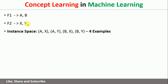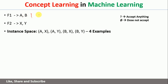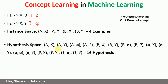The instance space contains four possibilities. Out of these four possibilities, some examples will be given to us. Now, how to write the hypothesis space? If we want to write the hypothesis space, we need to consider two more things: question mark and null for each feature. So we write all possible combinations — 4 into 4 — and we get 16 combinations. So the hypothesis space for this set of features is 16.